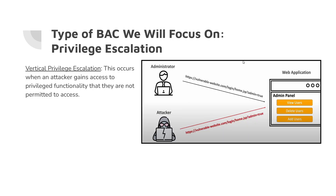The second type is vertical privilege escalation, which occurs when an attacker gains access to privileged functionality they are not permitted to access — such as a regular user obtaining admin privileges. In this example, a URL contains 'admin=true' at the end. If you're not an admin, this would be set to false. But if an attacker recognizes this and alters that last part of the URL to set admin to true, they would be allowed into the admin panel where they could view user data, delete users, and add users — which you would not want a regular user to do, especially with malicious intentions. Our LLAMA 3 AI model will be trained specifically on these two topics.